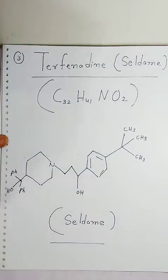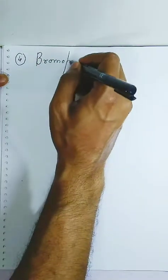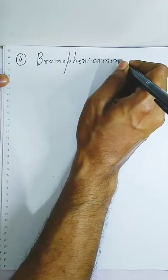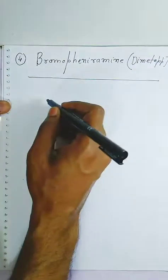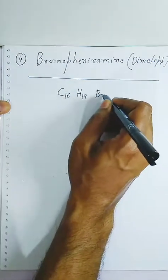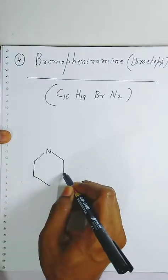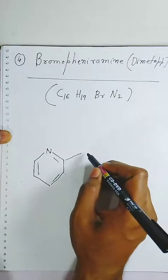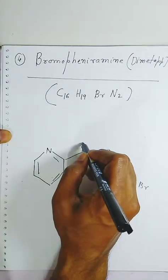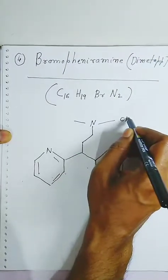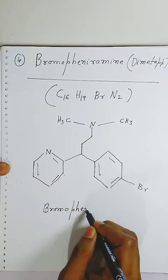The fourth anti-histamine we are going to see is brompheniramine, also called Dimetapp. When you see the molecular formula, this drug has 16 carbon, 19 hydrogen, 1 bromine, and 2 nitrogen atoms. When you see the structure of brompheniramine, it has 1 heterocyclic atom — nitrogen in the ring — which is connected with a bromine-substituted benzene ring. It has 1 more carbon connected with nitrogen, which has 3 valencies filled with methyl groups. This is the structure of brompheniramine.